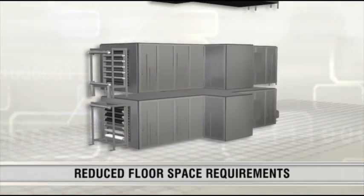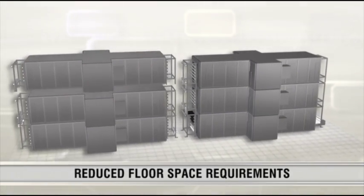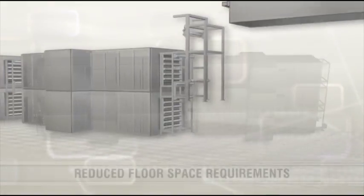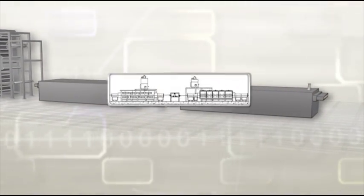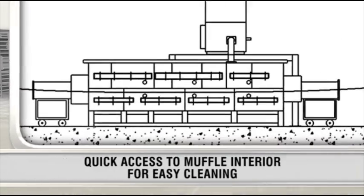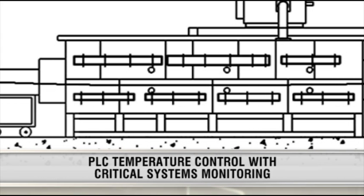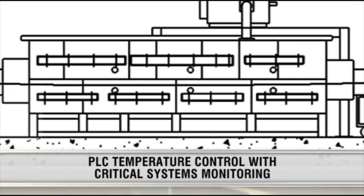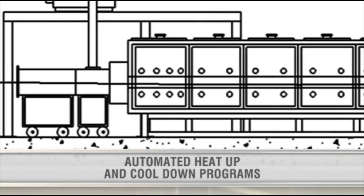Despatch oxidation ovens consist of zones that can be vertically stacked to reduce floor space requirements. Despatch offers LT and HT furnaces designed for ease of operation with quick access to the muffle interior for easy cleaning. A PLC provides precise temperature control, critical systems monitoring, and automated heat up and cool down programs.